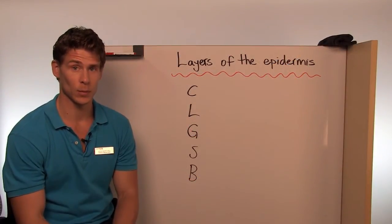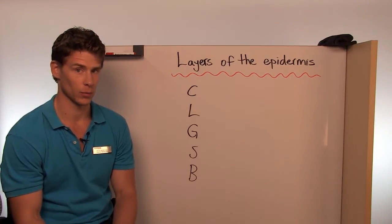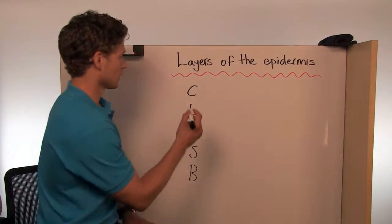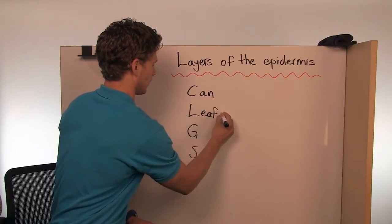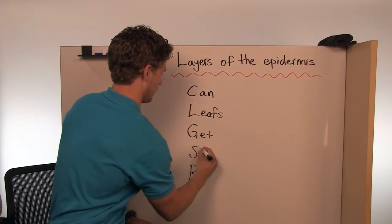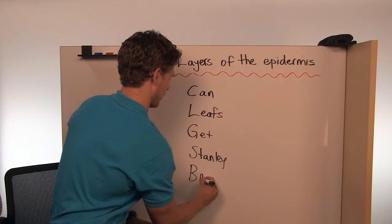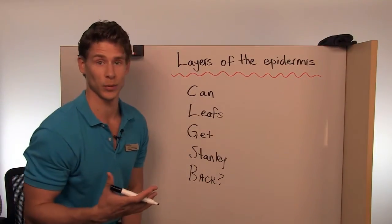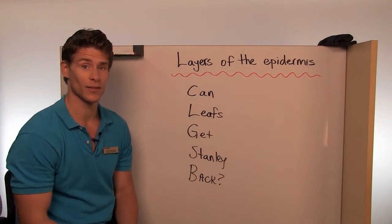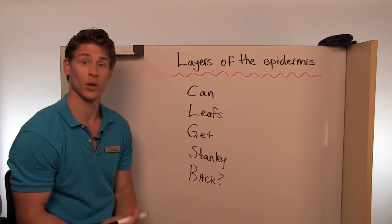Remembering the different layers of the epidermis might be tricky, so what I like to employ is a mnemonic. This helps remember the different layers pretty well. What I like to do is write: "Can Leafs get Stanley back?" If you are a hockey fan and you like the Leafs, this will help you. Now remember, you do not always have to use these mnemonics or mnemonics you see in textbooks — you can always make your own up.